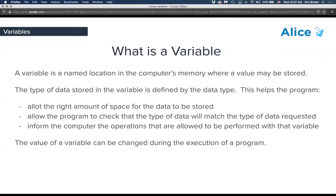Setting a data type helps the program allocate the right amount of space for the data to be stored. Obviously, a text string or whole number is different from the data around an object. It also allows the program to check that the data type will match with what's being requested — whether it's a whole number, a boolean, or a gallery object.